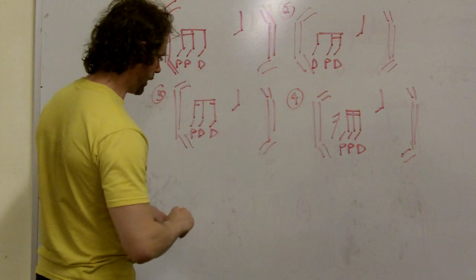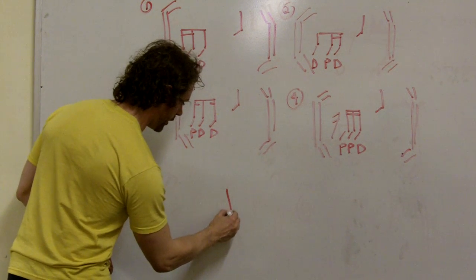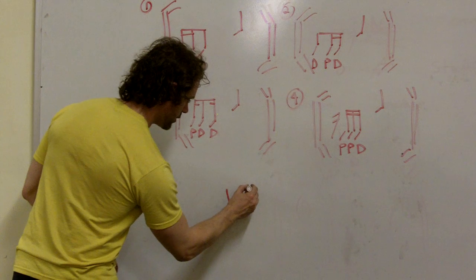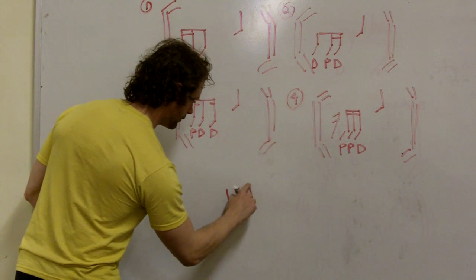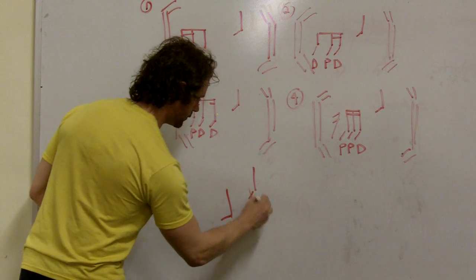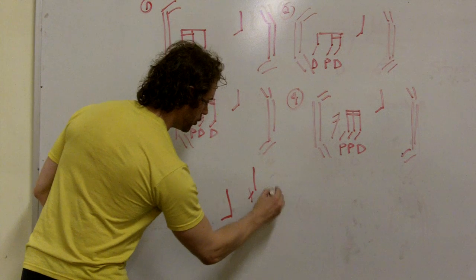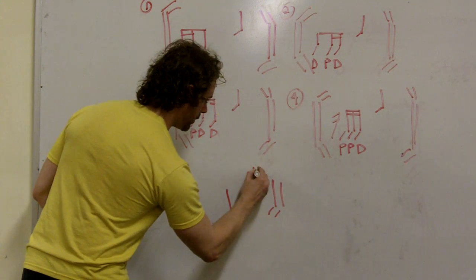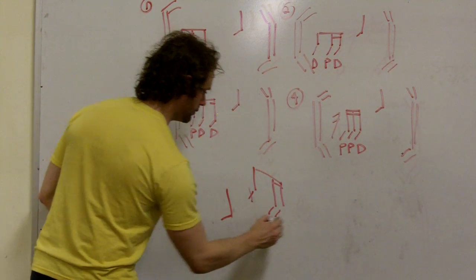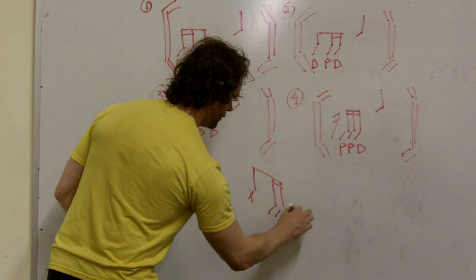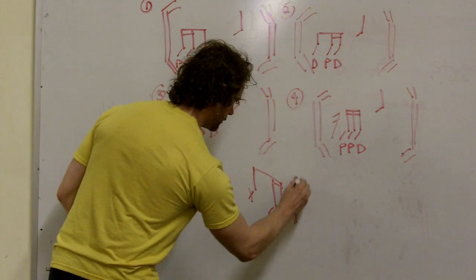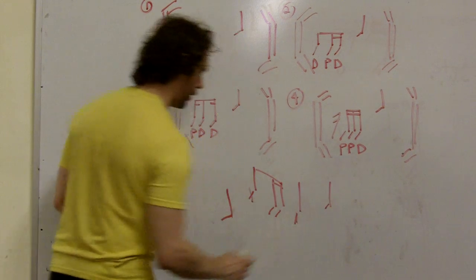So let's say you have bass drum on beat one, snare drum, and then end of beat two, going to beat three, and then beat four.